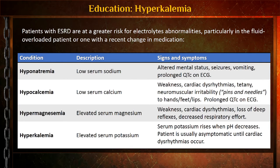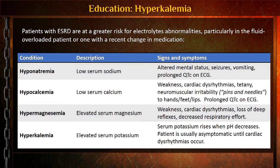Hypocalcemia — low serum calcium — can cause weakness and dysrhythmias, including prolonged QT intervals. Hypermagnesemia — high magnesium — can cause cardiac dysrhythmias, loss of deep tendon reflexes, and decreased respiratory effort. Hyperkalemia — high potassium — is where we often don't know until we see it on the cardiac monitor, since we don't have iStats in the field. The most common thing we'll see are peaked T-waves as a cardiac disturbance.